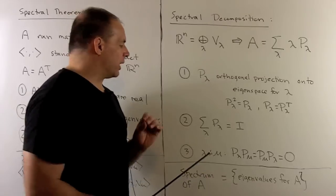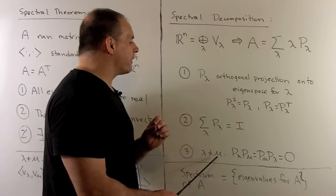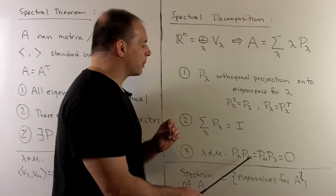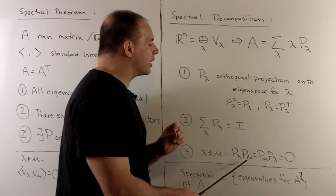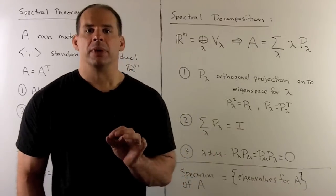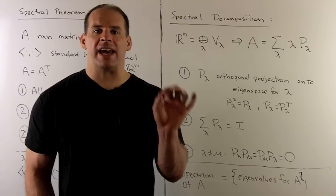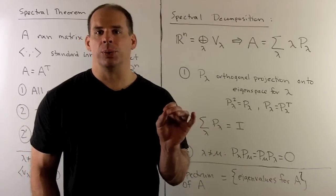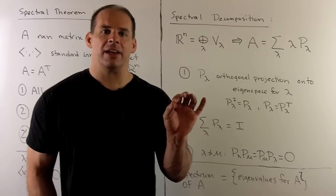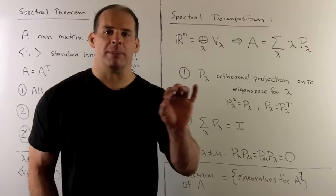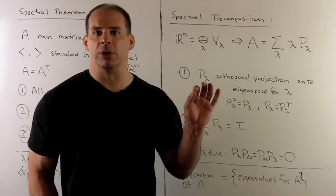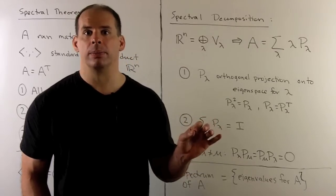Finally, when we have distinct eigenvalues, if we compose our projection operators, we're going to get zero. So if I project down to the eigenspace for lambda, and then take the projection from that space down to the eigenspace for mu, we expect to get zero.